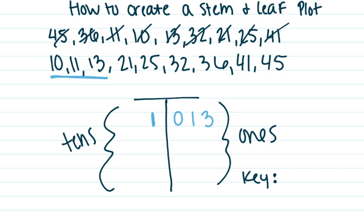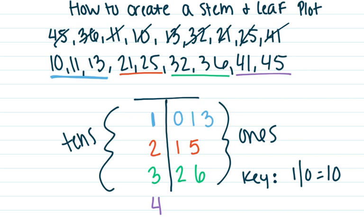So I'm going to go ahead and do my key. My key is going to be 1 line 0 equals 10. Then my next set of numbers here are in the 20s, so that means I need a 2 over here. And then I have 21 and 25. My next set of numbers are in the 30s, so I need a 3, 32, 36. And then my last set of numbers over here are in the 40s. I'll make this go down a little bit more. 41 and then 45.